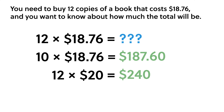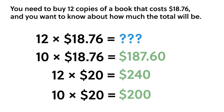Or you might even round both numbers, calculating 10 times $20 equals $200. These are all legitimate ways to estimate the total, and all are very reasonably close to the exact value of 12 times $18.76, which equals $225.12.